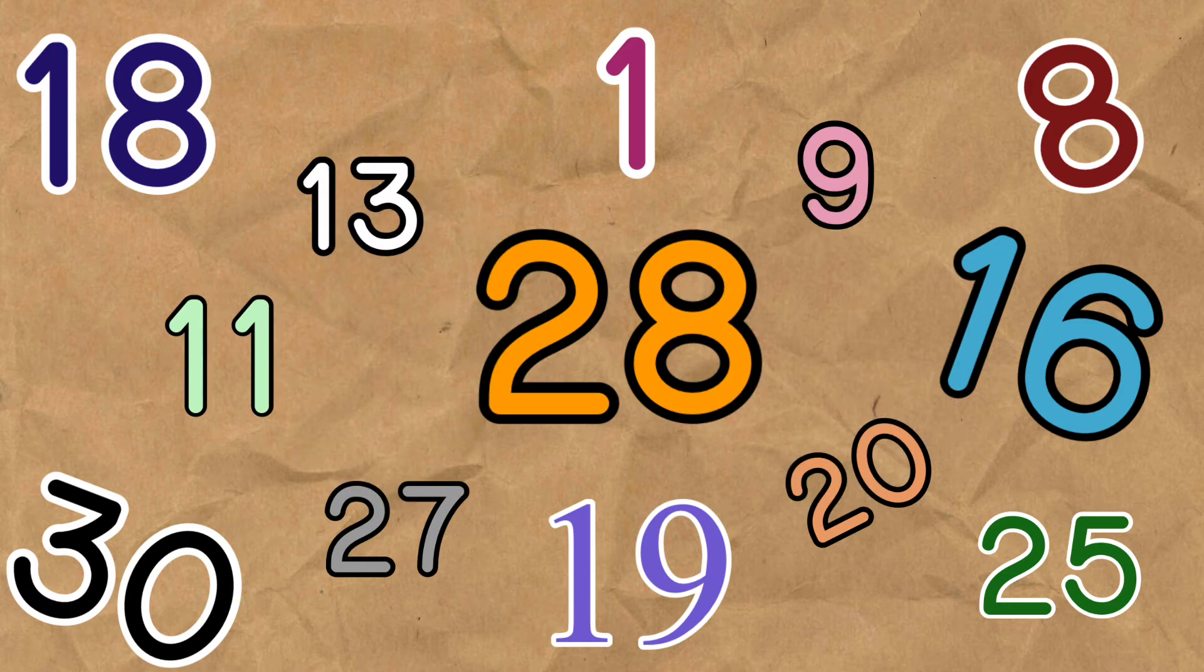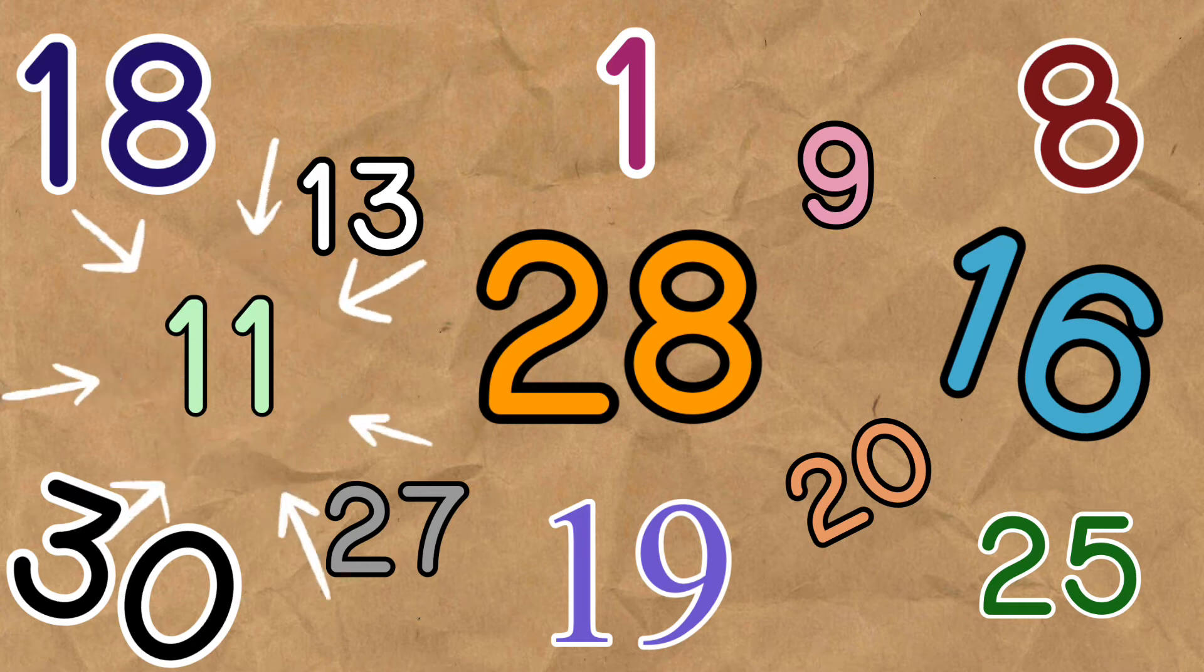First, can you look for the number 11 and write it on your laminated sheet using your whiteboard marker? Again, look for number 11. Once you've found it, please write it down. Have you seen number 11? Let's double check your answer. This is number 11. Were you able to get it? If not, it's okay. You can try again on the next round.